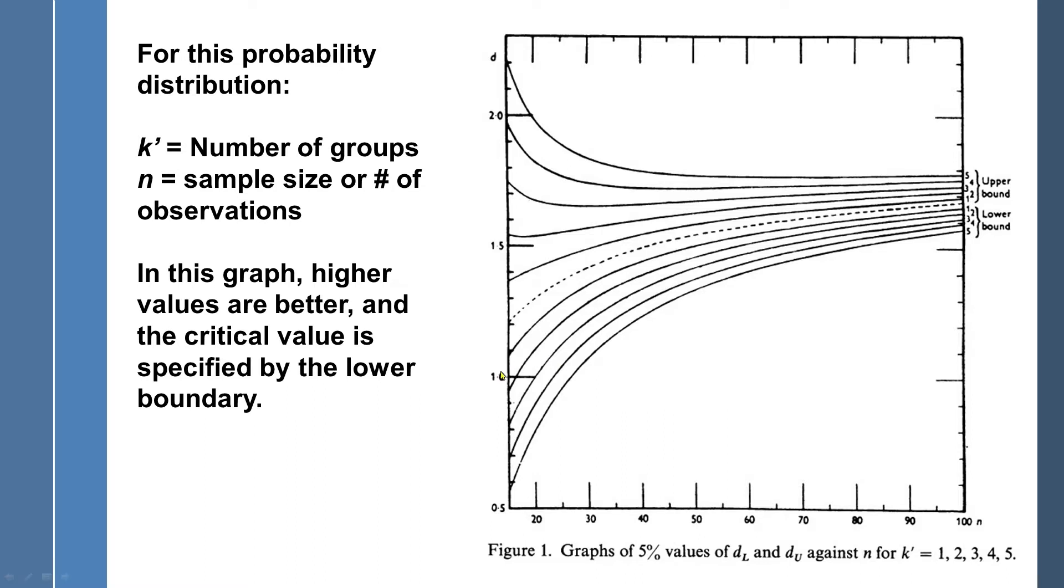So higher scores are better, and what you can see here following the mouse is the dashed line is the separation between the lower boundary and the upper boundary. What Durbin-Watson specified in their article was that very low scores are significantly autocorrelated. So if you fall below this threshold, then you have a problem with autocorrelation. If you fall above the upper threshold, then you're not autocorrelated, and if you're somewhere in between, then you have the possible outcome of autocorrelation.